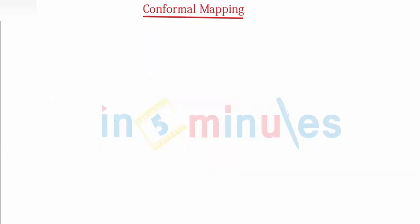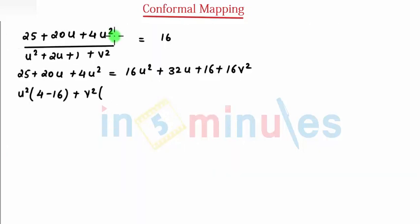There was a 4v square also so I need to write that. When you take v square common that becomes 4 minus 16, and then if you take u common that makes 20 minus 32, and the last constant becomes 25 minus 16 and that's equal to 0.